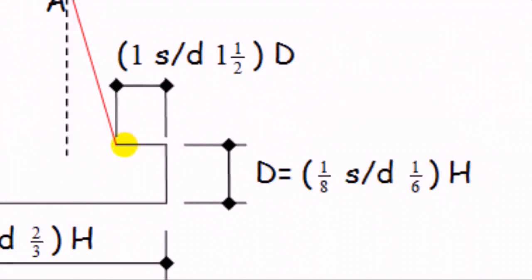Biasanya ada kalau kita mau agak konstruksinya agak bagus. Ini ada bagian yang menonjol di sini. Bagian yang menonjol ini bisa kita ambil 1 sampai dengan 1,5 dari tebalnya.